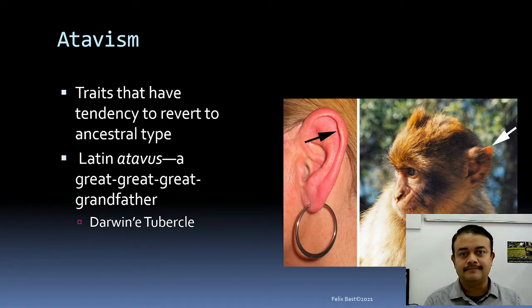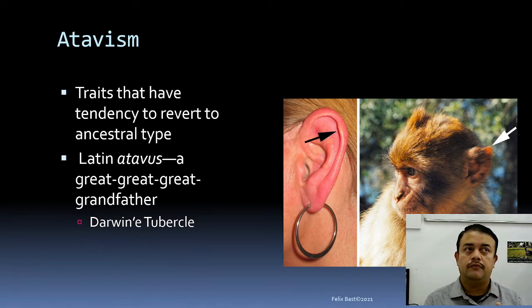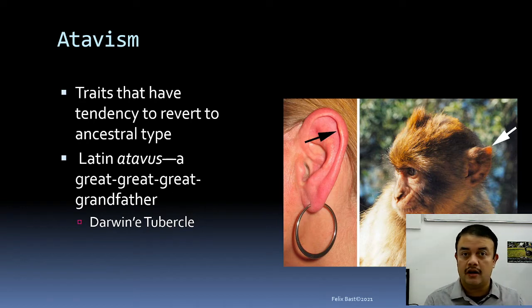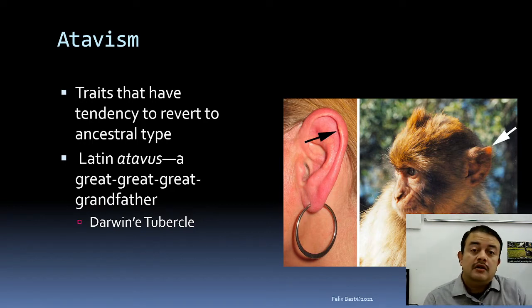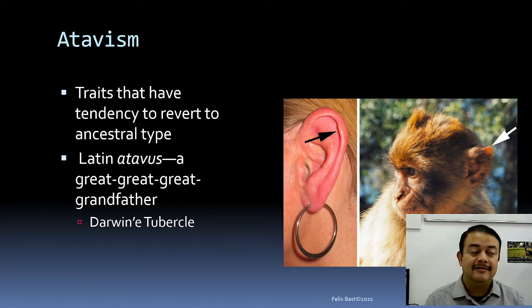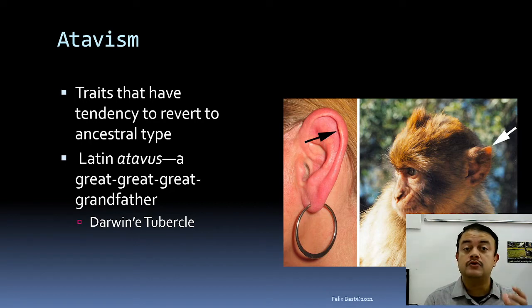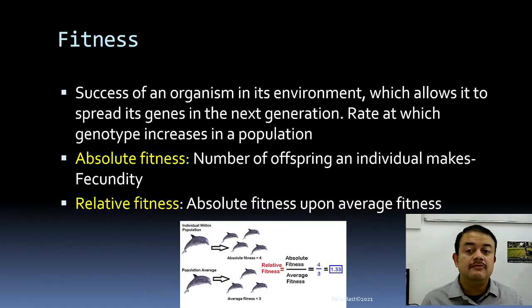Similarly, dolphins and whales — which are mammals — still have a hip bone, even though they don't walk. This vestigiality, or atavism, persists from their terrestrial ancestors. Now, fitness — which we have already covered — is the success of an organism in its environment that allows it to spread its genes to the next generation.